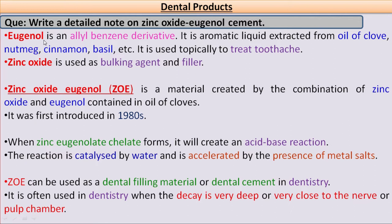Eugenol is an Allyl Benzene Derivative. It is an aromatic liquid that is extracted from clove oil, nutmeg oil, cinnamon oil, and basil oil. It is used topically to treat toothache.